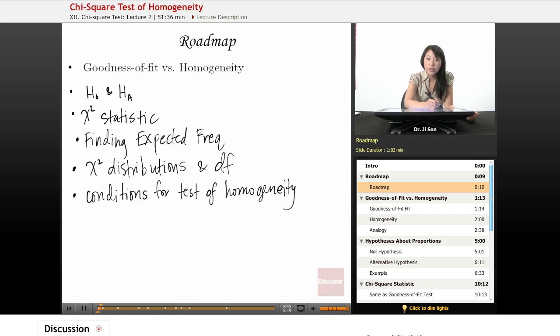Then we're going to go over the chi-square statistic. Also, finding the expected values is going to be a little bit different in tests of homogeneity.